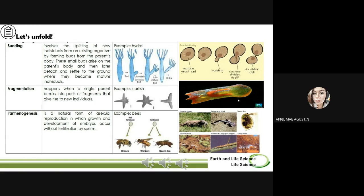Parthenogenesis is a natural form of asexual reproduction in which growth and development of embryos occur without fertilization by sperm. In animals, parthenogenesis means development of an embryo from an unfertilized egg cell.